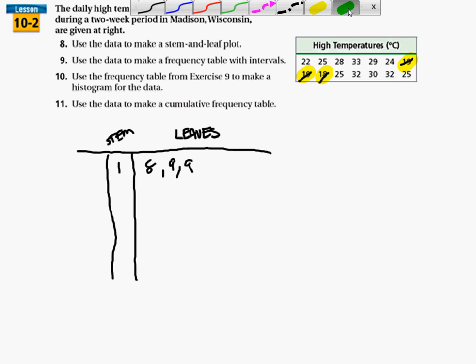Then we go to our twenties. So it looks like here we have one, two, three, four, five, six, seven. We have seven in our twenties.